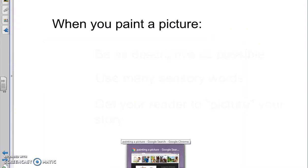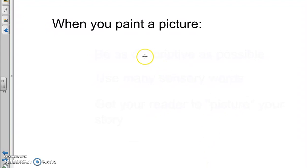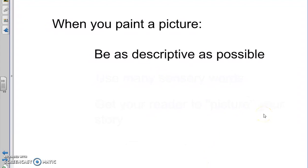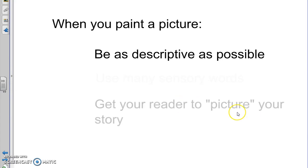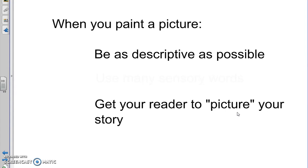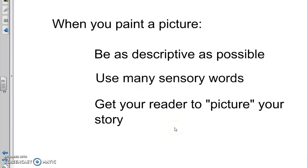When you paint a picture with your writing, what you want to do is be as descriptive as possible. It's important that you describe everything that's going on. What you want to do is get your reader to picture your story in their mind. You want your reader to read your story and have no questions about where it is taking place and what is going on. The way to do that is you want to use many sensory words.